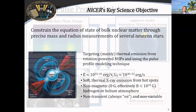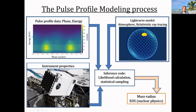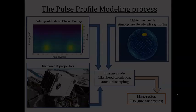This is a general overview of the technique: you have a rotating neutron star, you construct a model accounting for atmospheric effects and photon propagation from the deep gravitational potential to the observer. You then construct a synthetic pulse profile as a function of phase and energy, interface that with the instrument performance, and then interface all of that with sophisticated likelihood calculations and statistical sampling codes to reduce the mass, radius, and equation of state.